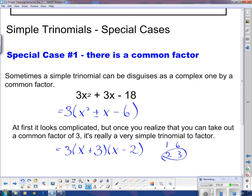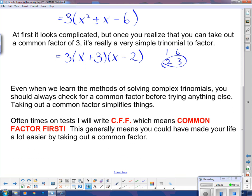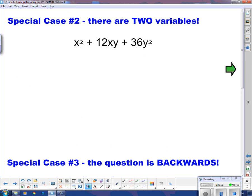So that was actually quite simple. Even when we learn the methods of solving complex trinomials, which we will do in the next lesson, you should always check for a common factor first before trying anything else. Taking out a common factor simplifies things. It makes numbers smaller. Oftentimes on tests I will write CFF, which means common factor first. This generally means that you could have made your life a lot easier by taking out a common factor.